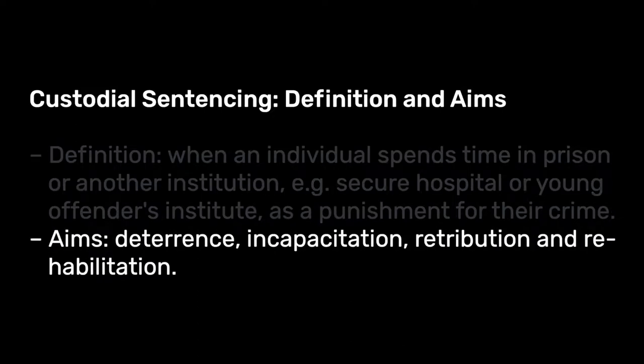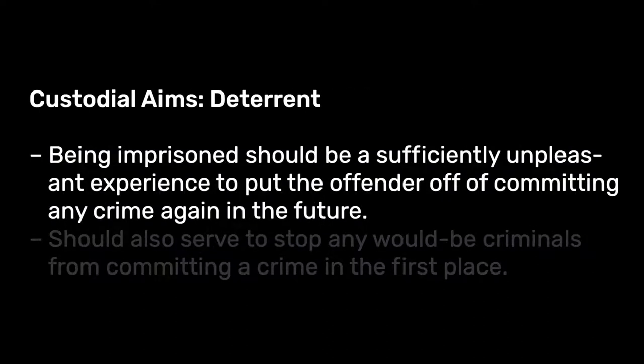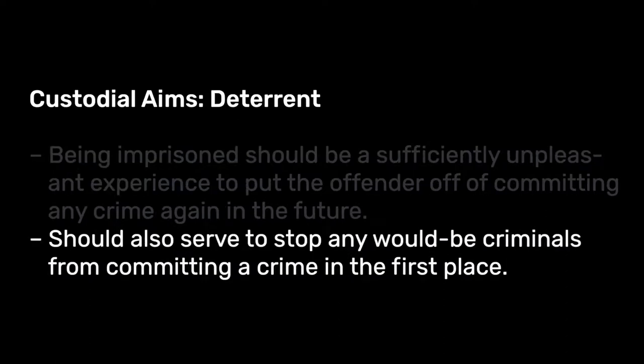There are generally regarded as four custodial aims: deterrence, incapacitation, retribution and rehabilitation. Deterrence is the idea that being in prison should be an unpleasant experience, so it should put off the offender from committing a crime in the future and should put off would-be criminals from committing crimes in the first place, effectively trying to set an example so that would-be criminals see the punishment and are put off from committing further crime.